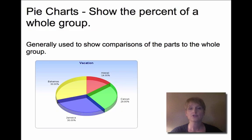Pie charts show the percent of a whole group. Let's say I asked 500 people where they like to go on vacation. This pie graph would split that up and show what percent of that 500 chose Hawaii versus Bahamas versus Cancun, Jamaica.